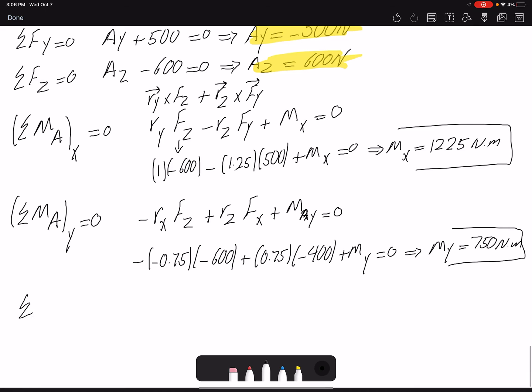And summation of moment about Z: MZ plus Fy·Rx minus Fx·Ry. But these two are zero for these two forces Fy and Fx. Therefore, my moment MZ equals zero.